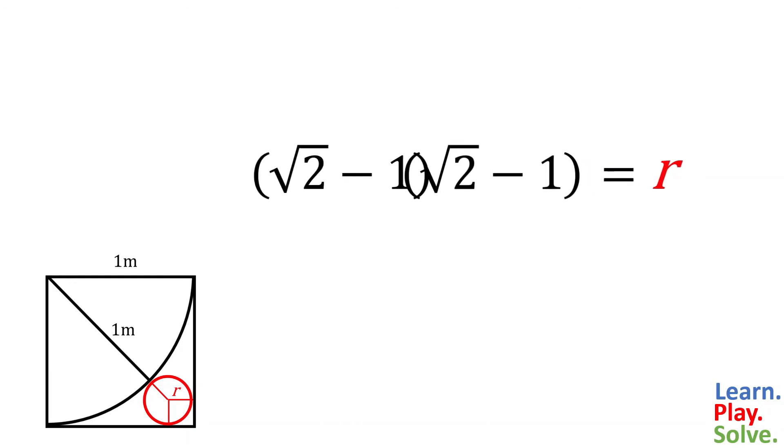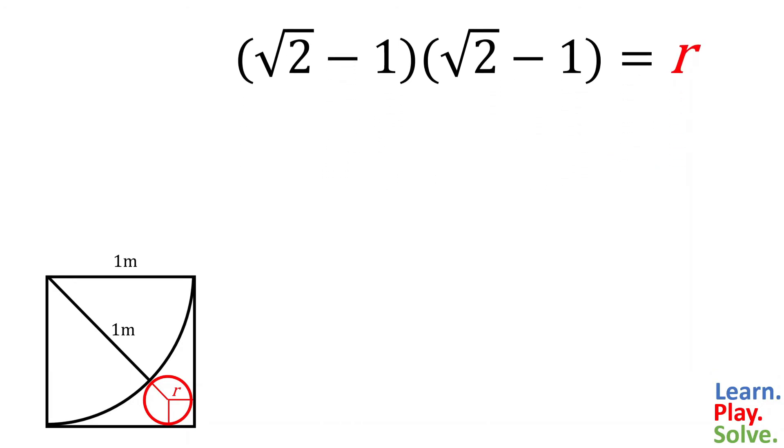Now let's square the remaining expression, again by foiling. Root 2 times root 2 equals 2. Root 2 times negative 1 is negative root 2, and negative 1 times root 2 is the same thing, so that's two negative root 2's. The last terms, negative 1 times negative 1, equal positive 1.